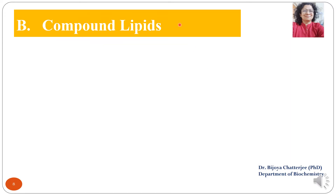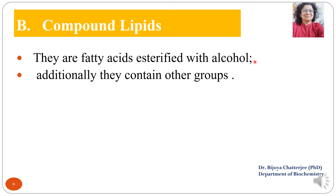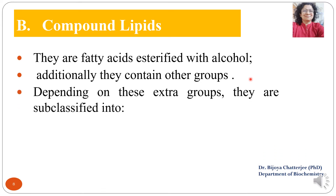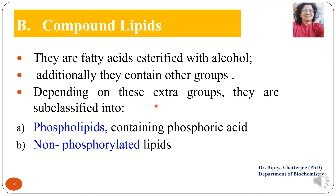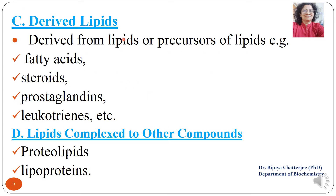Compound lipids are fatty acids esterified with alcohol, and additionally they contain other groups. Depending on these extra groups, they are subclassified into phospholipids containing phosphoric acid and non-phosphorylated lipids. Derived lipids are lipids derived from lipids or precursors of lipids — examples include fatty acids, cholesterol, prostaglandins, and leukotrienes. The fourth class are lipids complex to other compounds, which includes proteolipids and lipoproteins.